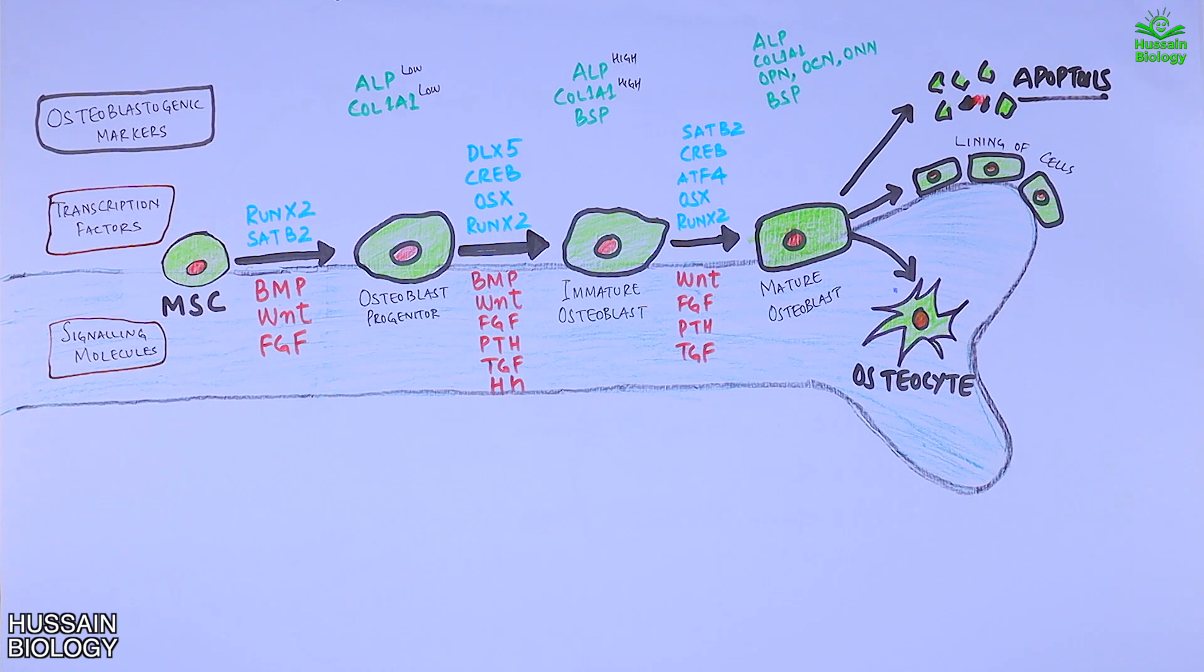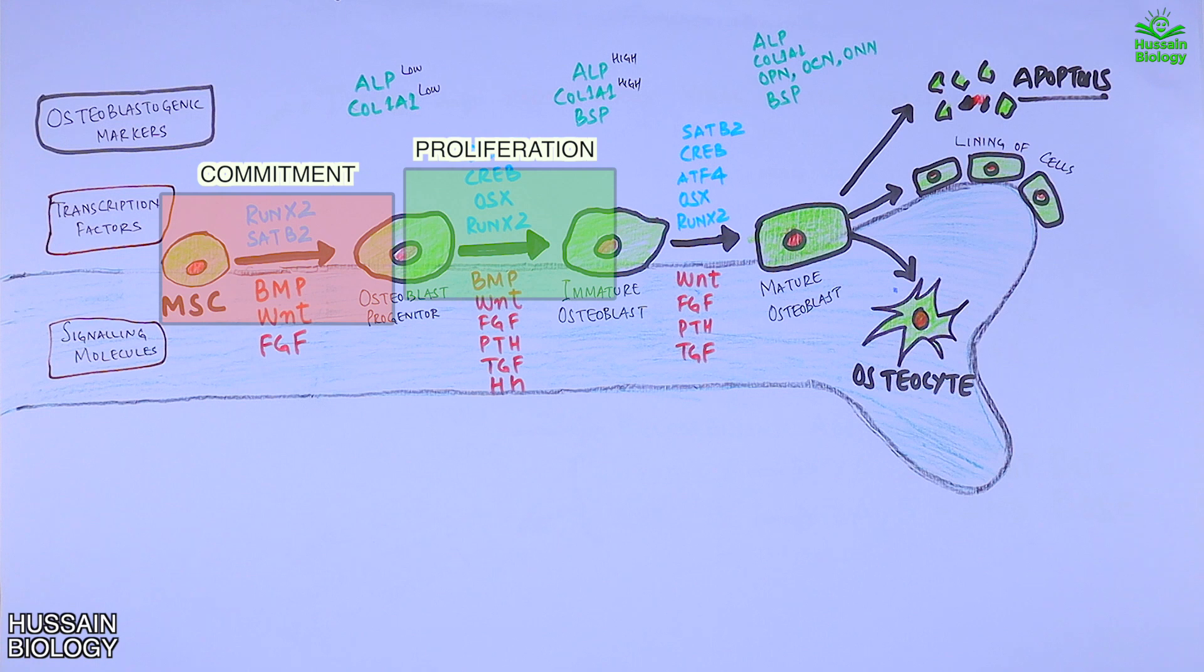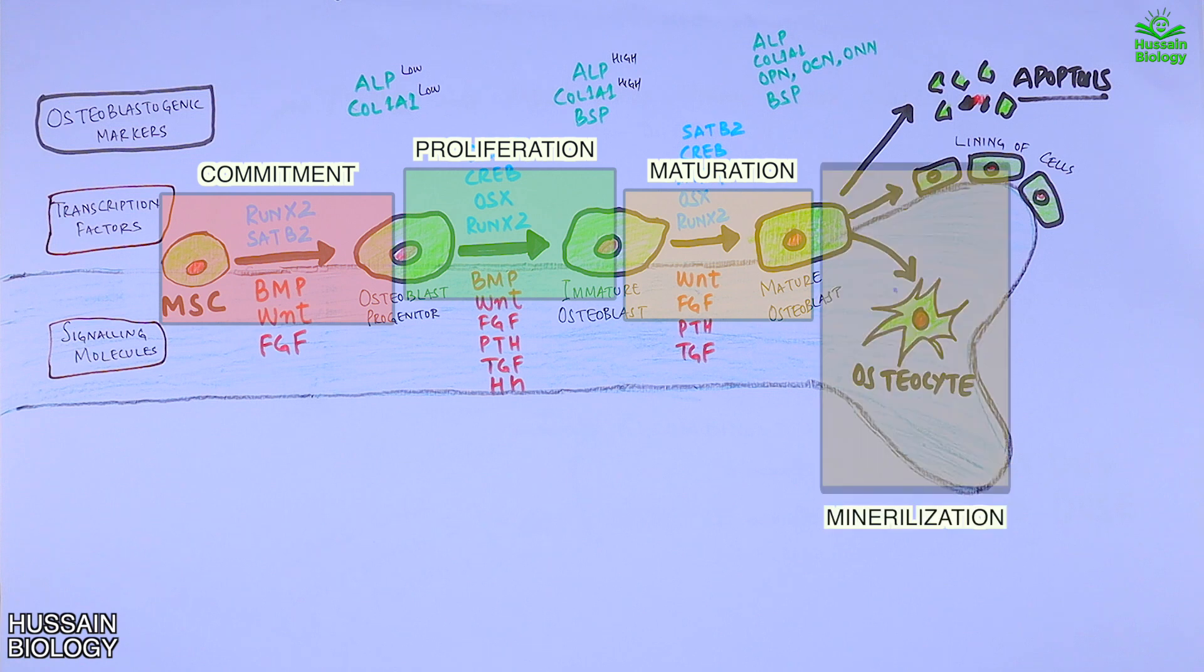Now if we divide the differentiation process into phases: the first phase is the commitment phase from MSC to progenitor cell; the second phase is the proliferation phase from progenitor cell to immature osteoblast; the third phase is the maturation phase where we get maturation of osteoblast; and then we have the mineralization phase where cells get into the bone in the form of osteocytes.